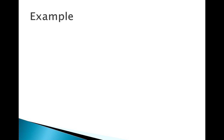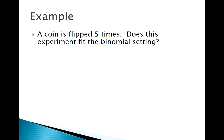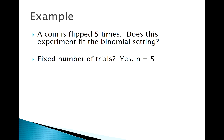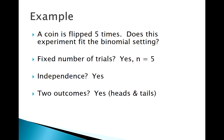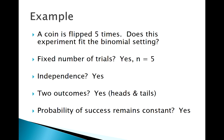Let's think about an example to build the ideas of the binomial — we'll start with flipping a coin five times. Let's check if it fits: fixed number of trials? Yes, five. Are they independent? Yes, one toss shouldn't affect another. Only two outcomes? Yes, heads or tails. Does the probability of success remain constant? Yes. We'll call getting heads a success.